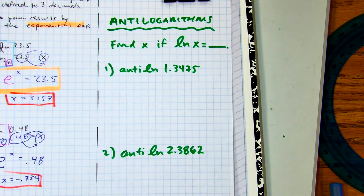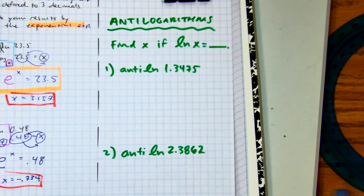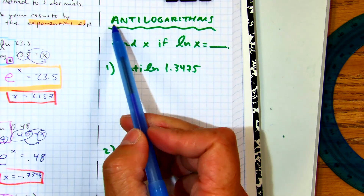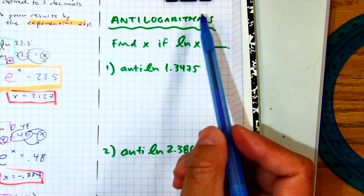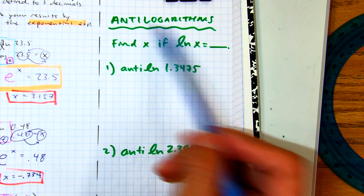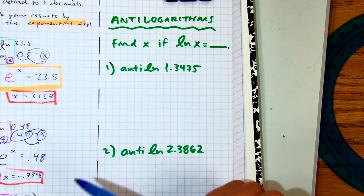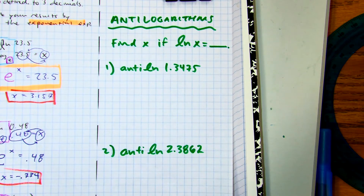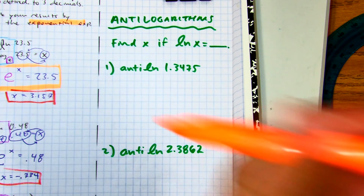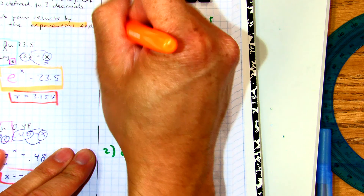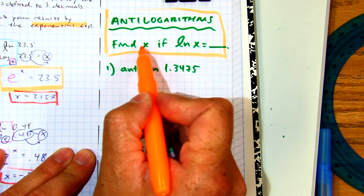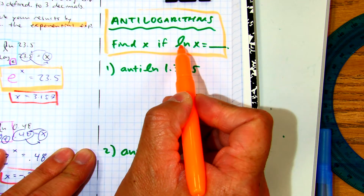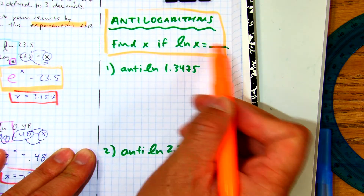Alright, so we're going to do some problems where it's actually just reverse. These are called anti-logarithms. What is an anti-logarithm? Basically, you have this sentence here — find x if the natural log of x equals blank.